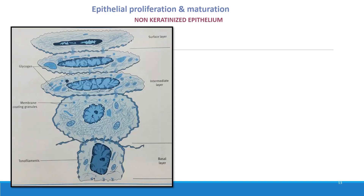Non-keratinized mucosa. The lining mucosa of the oral cavity — lips, buccal mucosa, alveolar crest, soft palate, underside of the tongue, and floor of the mouth — is made up of non-keratinized mucosa. The basal and prickle cell layers are similar to keratinized epithelium, but intercellular bridges and prickles are less prominent; hence, the prickle cell layer is called the intermediate layer. Glycogen synthesis takes place between the intermediate and superficial layers. The stratum corneum contains plump nuclei.